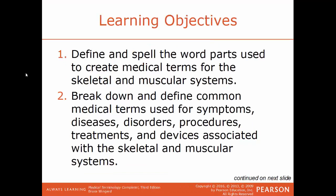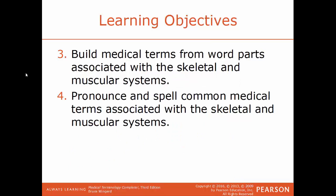The learning objectives for this chapter: define and spell the word parts used to create medical terms for the skeletal and muscular systems; break down and define common medical terms used for symptoms, diseases, disorders, procedures, treatments, and devices associated with skeletal and muscular systems; build medical terms for word parts associated with these systems; and pronounce and spell common medical terms associated with the skeletal and muscular systems.